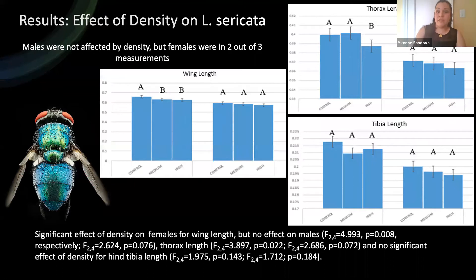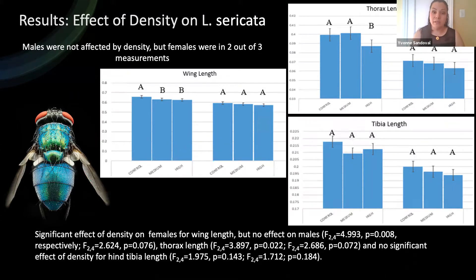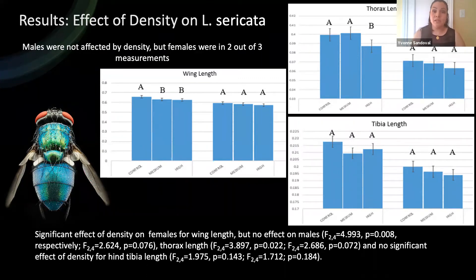For Lucilia sericata, the graphs of the results are in the same layout. There were significant effects due to treatment on females on the left, but not on males on the right. As density increased, their size decreased, hence exhibiting completely different sex responses when compared to those of vicina.